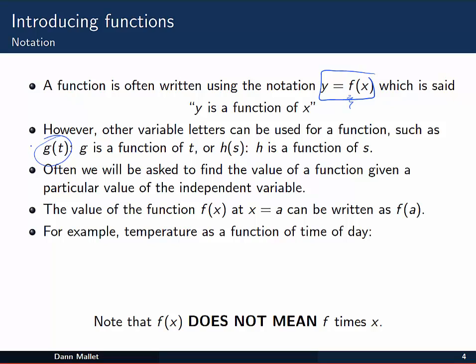For example, we could say something like g of t—g is a function of t, meaning the value of g depends on the value of t. And similarly, h of s—the value of h depends on the value of s.